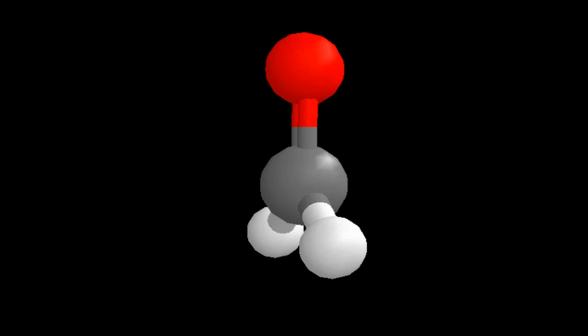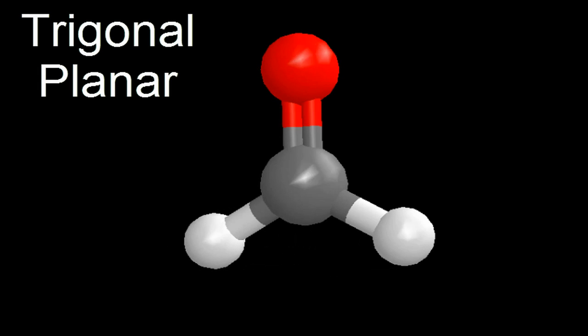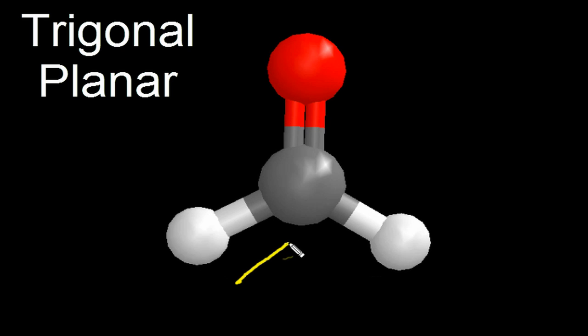You can see the molecule here on the screen. And as we rotate it, we'll see that it is all in one plane. That we have a trigonal planar molecular geometry, and that the atoms are spread out as far away from each other as they can within that plane. We can draw our bond angles here as 120 degrees, and that's the same as this bond angle up here, and this bond angle up here.